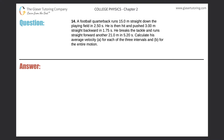Number 14: a football quarterback runs 15.0 meters straight down the playing field in 2.5 seconds. He is then hit and pushed 3 meters straight backward in 1.75 seconds. He breaks the tackle and runs straight forward another 21 meters in 5.2 seconds. Calculate his average velocity for each of the three intervals, and then for the entire motion. Let's draw a picture first.